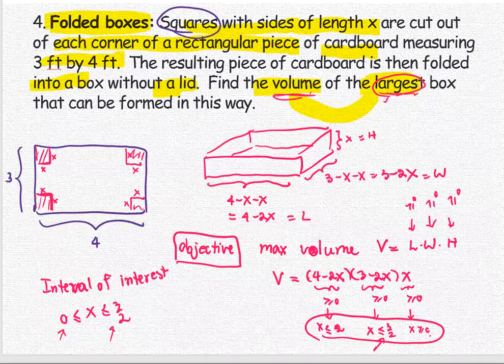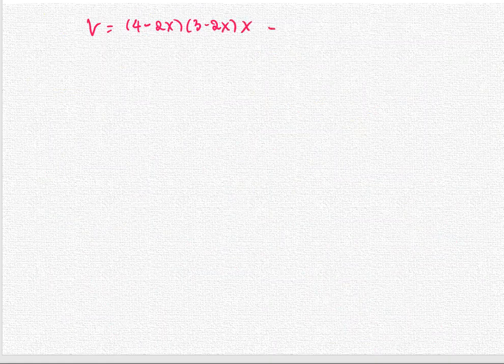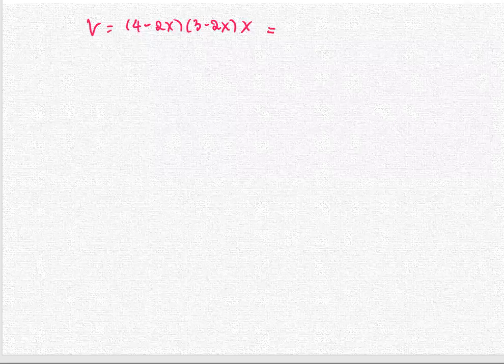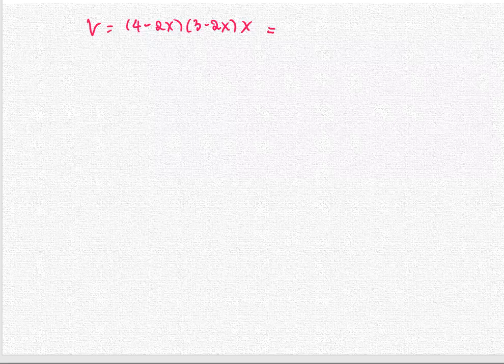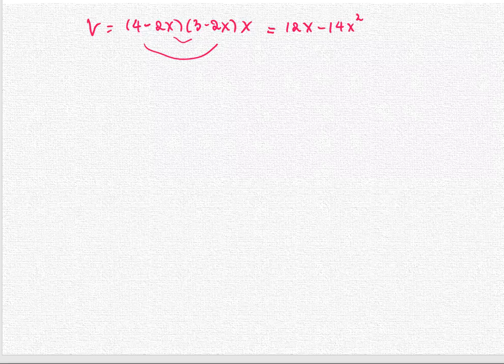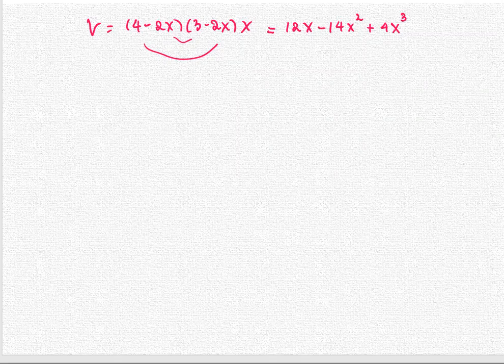Now let's work on finding the critical numbers. From the volume equals (4 - 2x)(3 - 2x)x, we expand this out and write it as a polynomial of degree 3. We have 12x minus 14x squared plus 4x cubed.